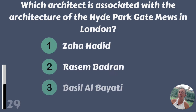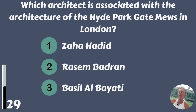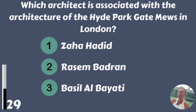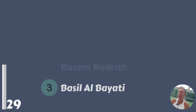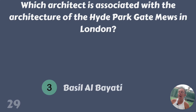Which architect is associated with the architecture of the Hyde Park Gate Mews in London? Zaha Hadid, Rasem Badran or Basil Al-Bayyati? Basil Al-Bayyati.